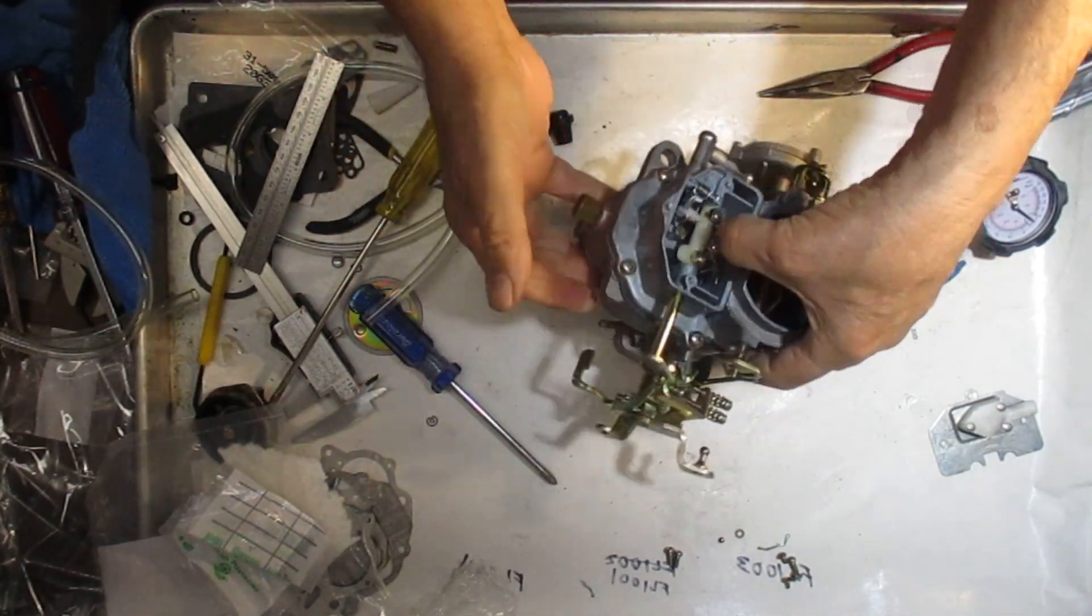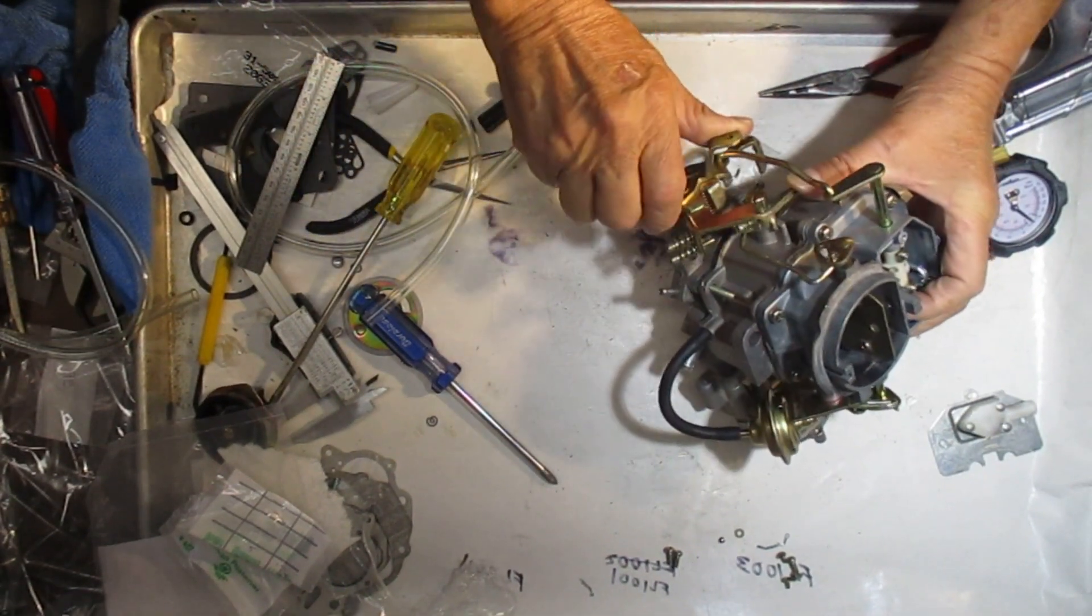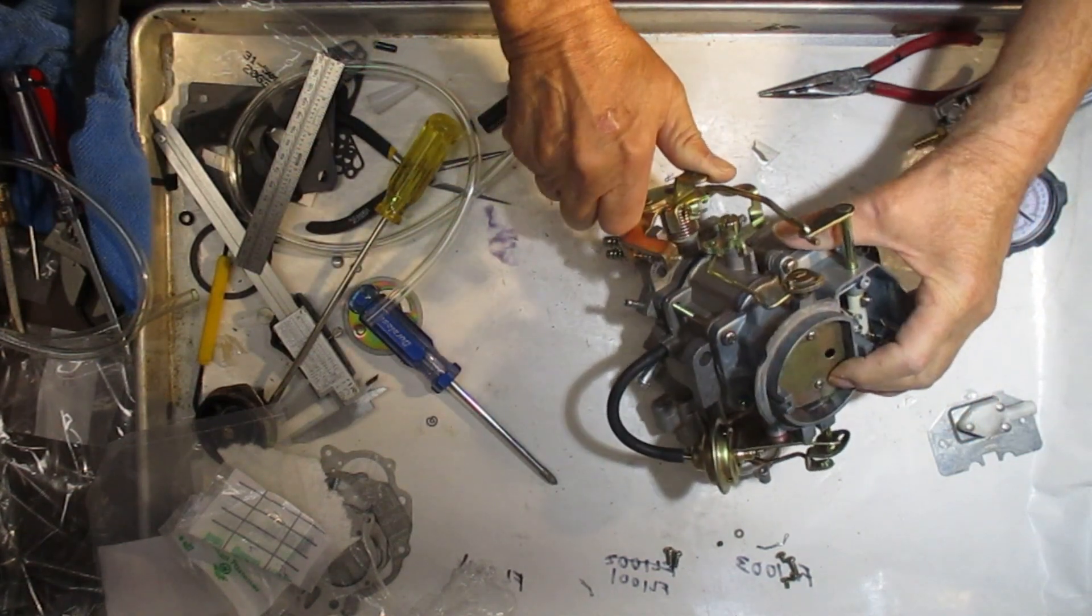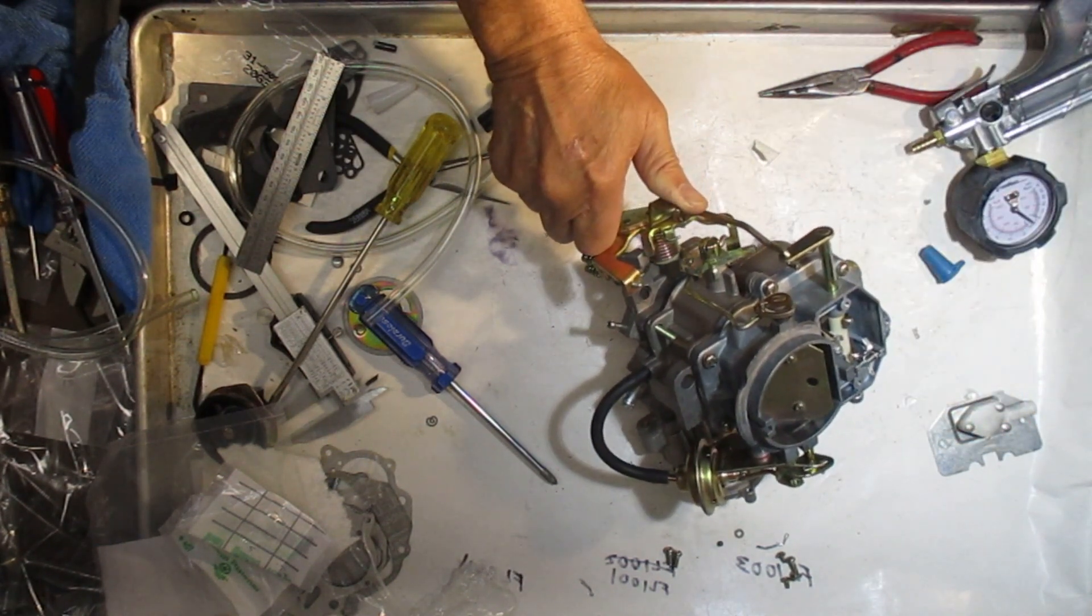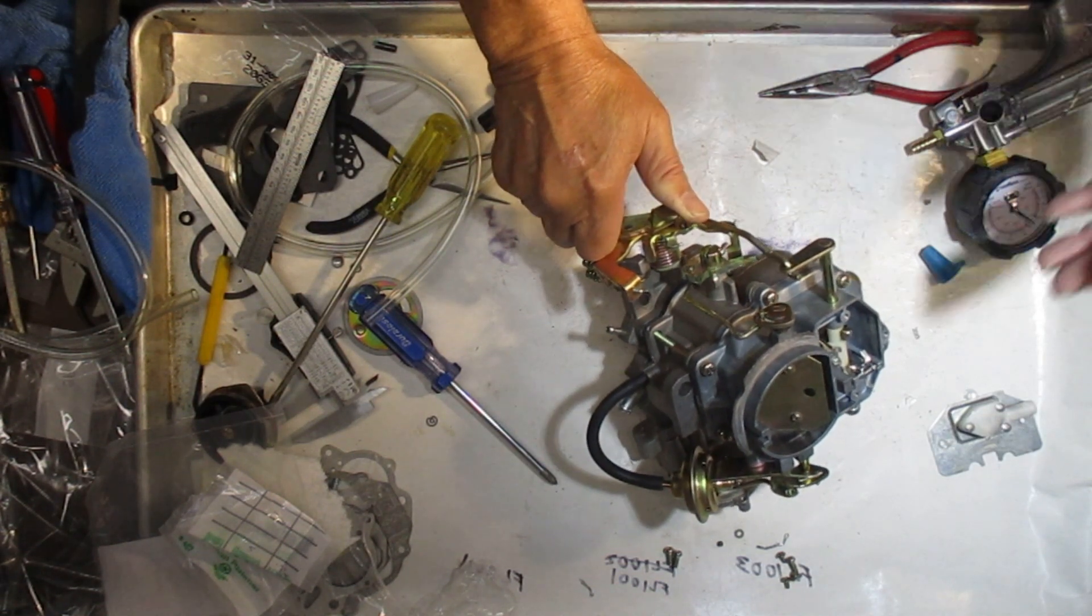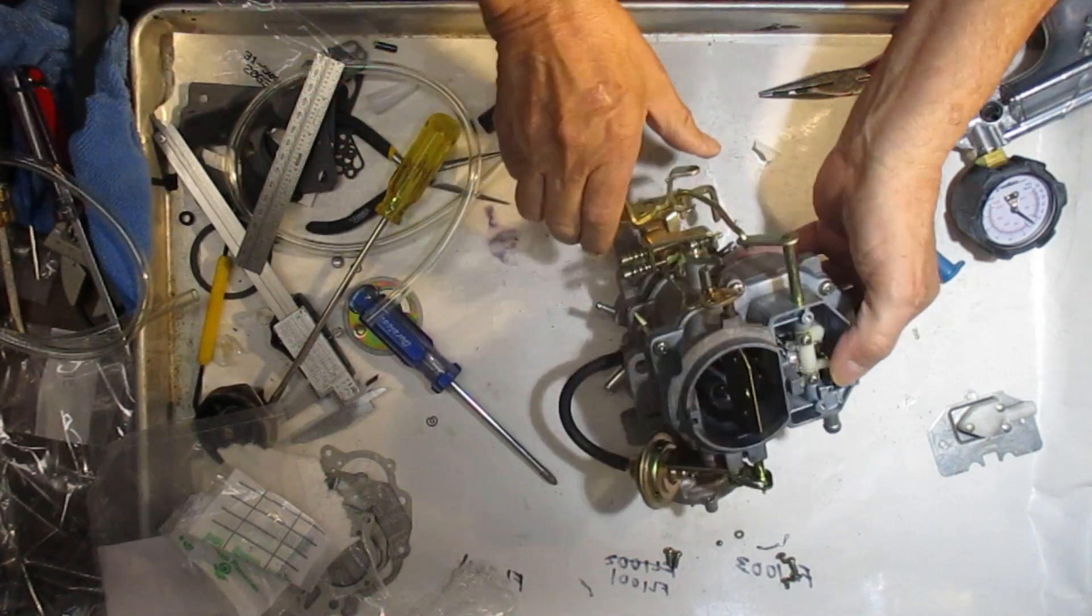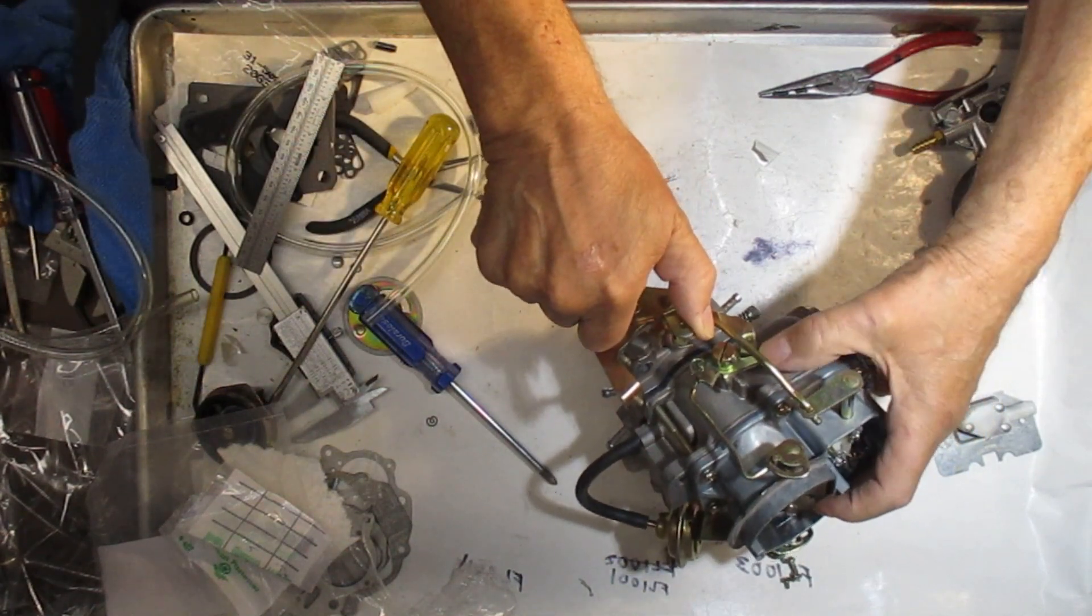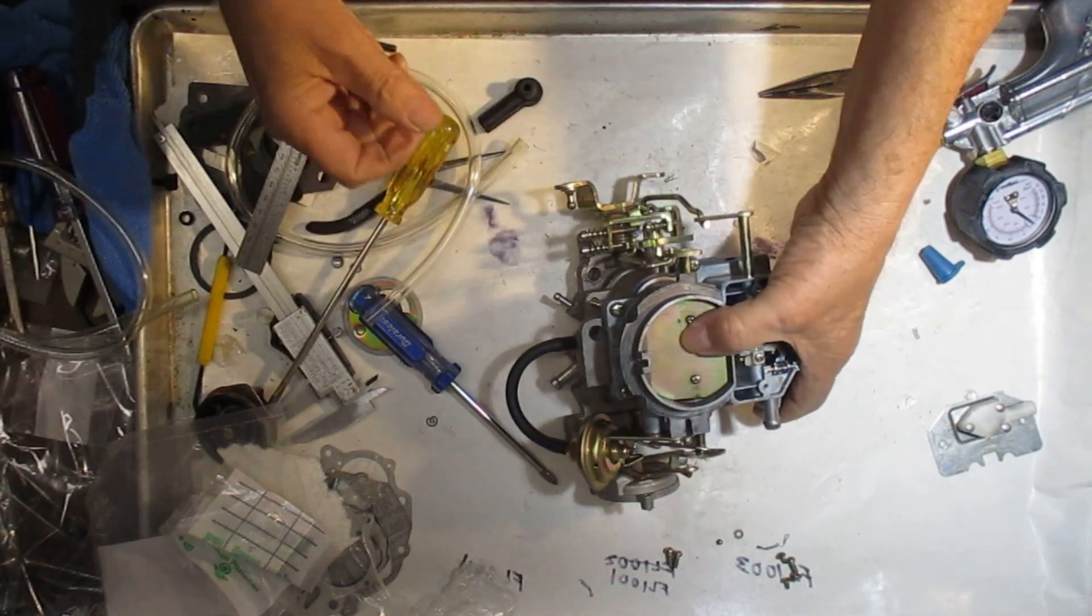And the next one would be the unloader. So on the unloader, hold the throttle all the way open. Hold the choke closed. Just like that. And again, measure this distance, this opening here. And on mine, the opening should be a quarter inch. It could be different on yours. To adjust, you bend this right here, up or down. So again, wide open. Close your choke valve until this touches. Measure the distance. If you need to adjust it, bend this arm right here, up or down a little bit. Doesn't take much.